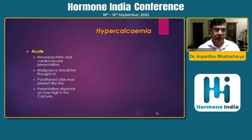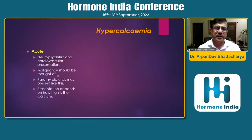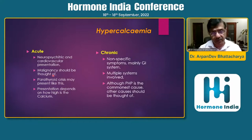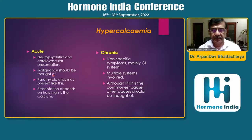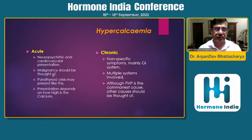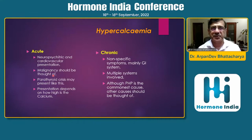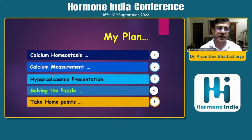An acute presentation usually involves neuropsychiatric and cardiovascular symptoms, and is mostly due to malignancy. Parathyroid crisis can also cause acute presentation. However, hyperparathyroidism is more often a chronic presentation because the adenoma or hyperplasia increases PTH level over time. One important point: if calcium is very, very high — say 16-17 — it is likely primary hyperparathyroidism, because at that calcium level, the underlying malignancy would likely have killed the patient already.